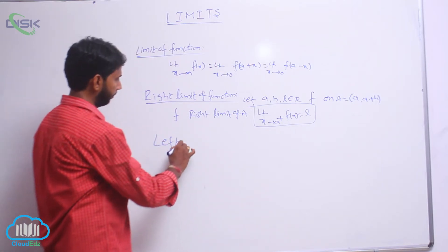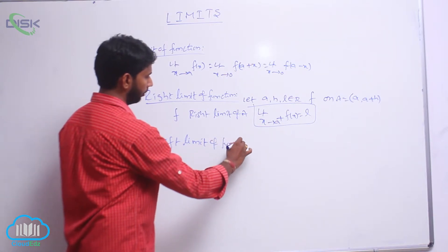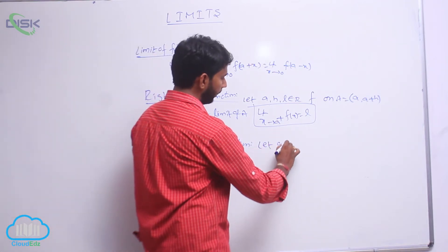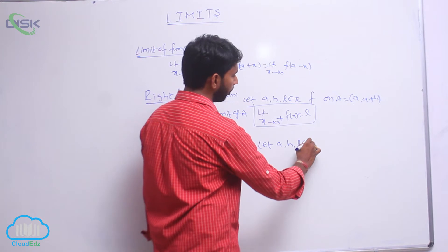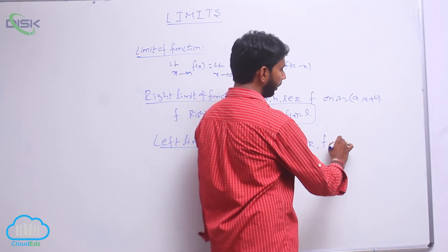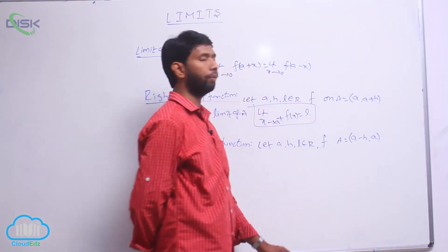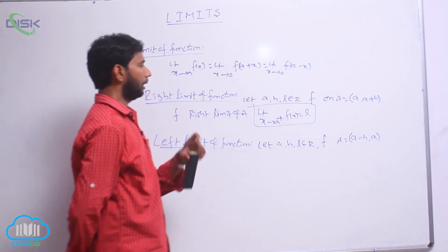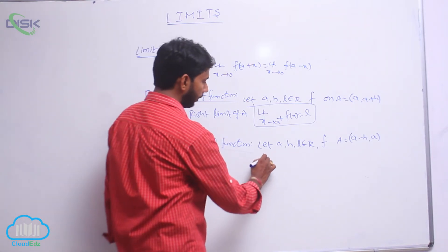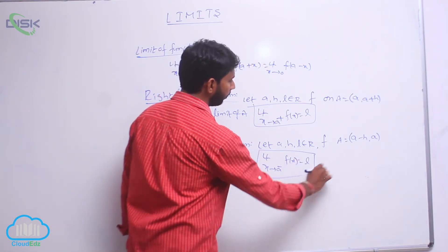Left limit of the function. Let a, h, l belong to ℝ, and the function f is defined on capital A equal to (a minus h, a). Then f is said to be the left limit of the function when limit x tends to a minus of f(x) is equal to l.